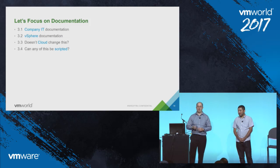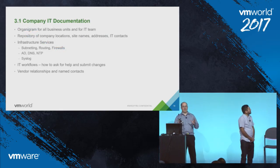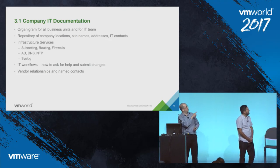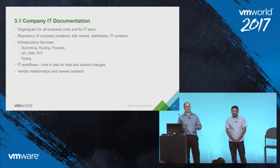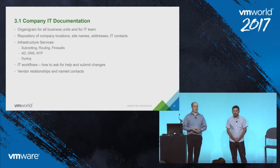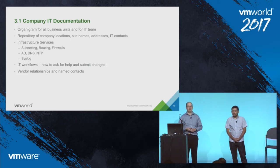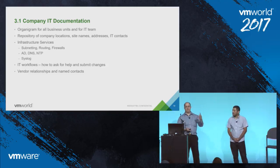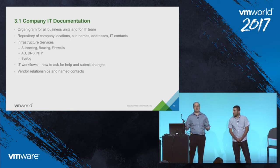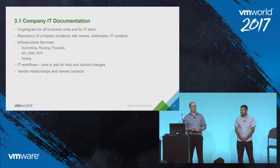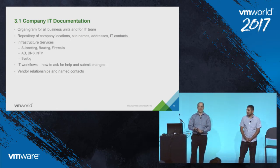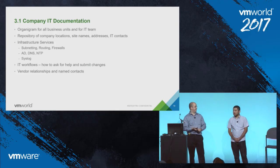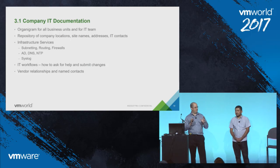Let's focus on documentation. Start with company-wide IT documentation: an org chart for all business units, especially the IT team. Have a repository of company locations — site names, addresses, and IT contacts. In an outage, this saves valuable time. As a vSphere administrator, you also need documentation for infrastructure services you rely on: Active Directory, subnetting, routing, firewall segments, DNS, NTP, and syslog.